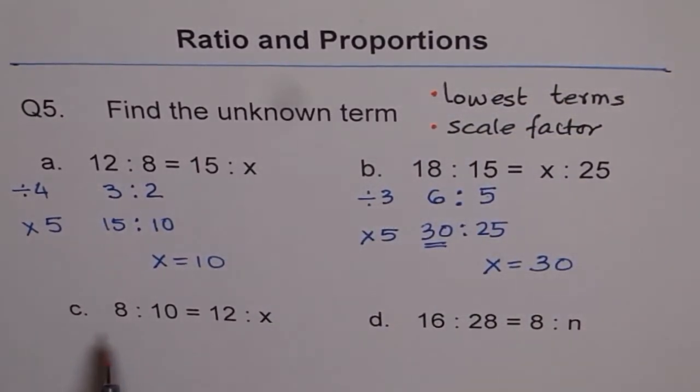So here are two problems for you to solve. 8 is to 10 equals to 12 is to X. Reduce them to lowest terms since you know 8 times 1 is 8, 8 times 2 is 16, a number in between.